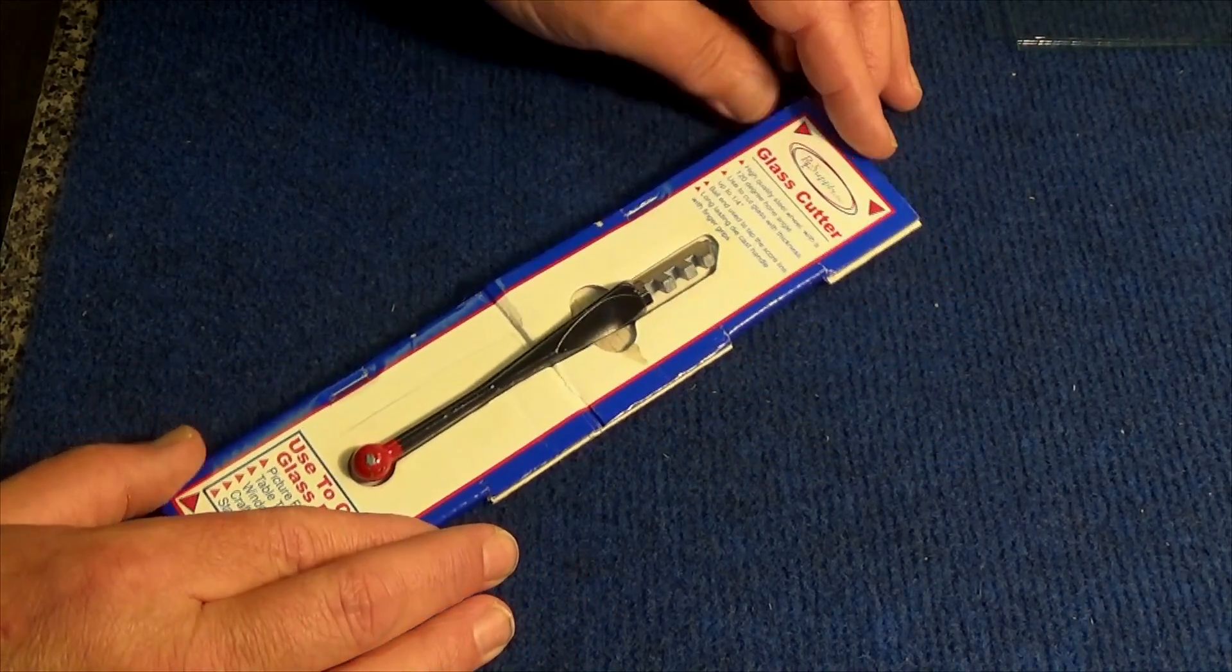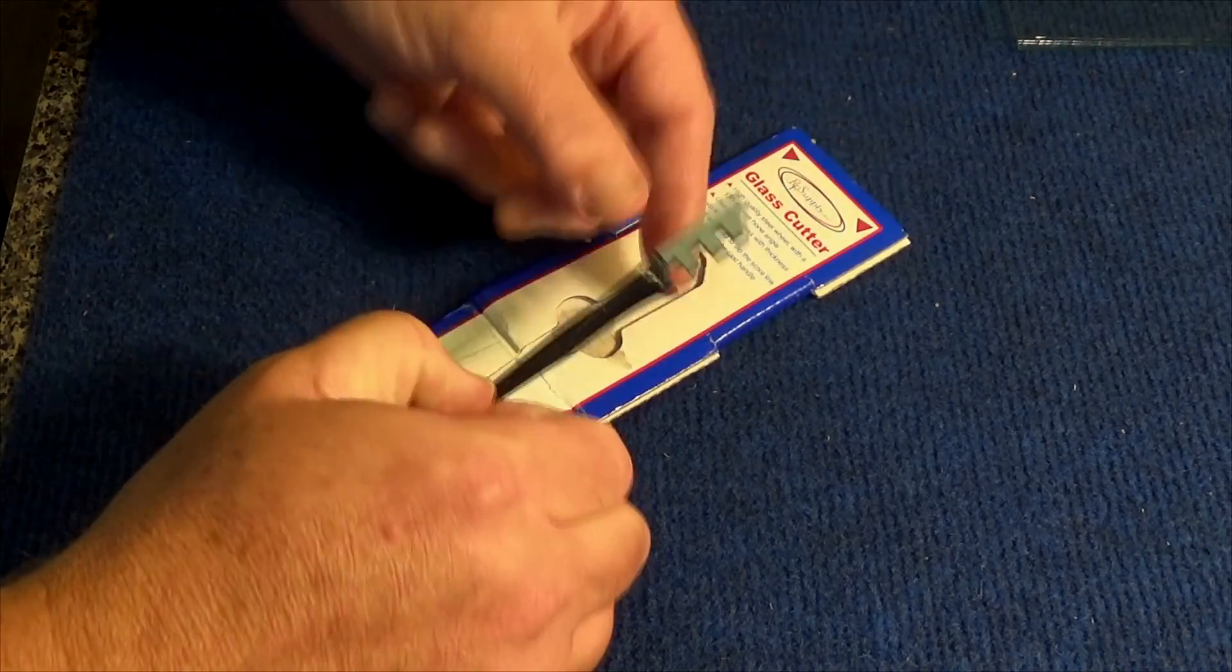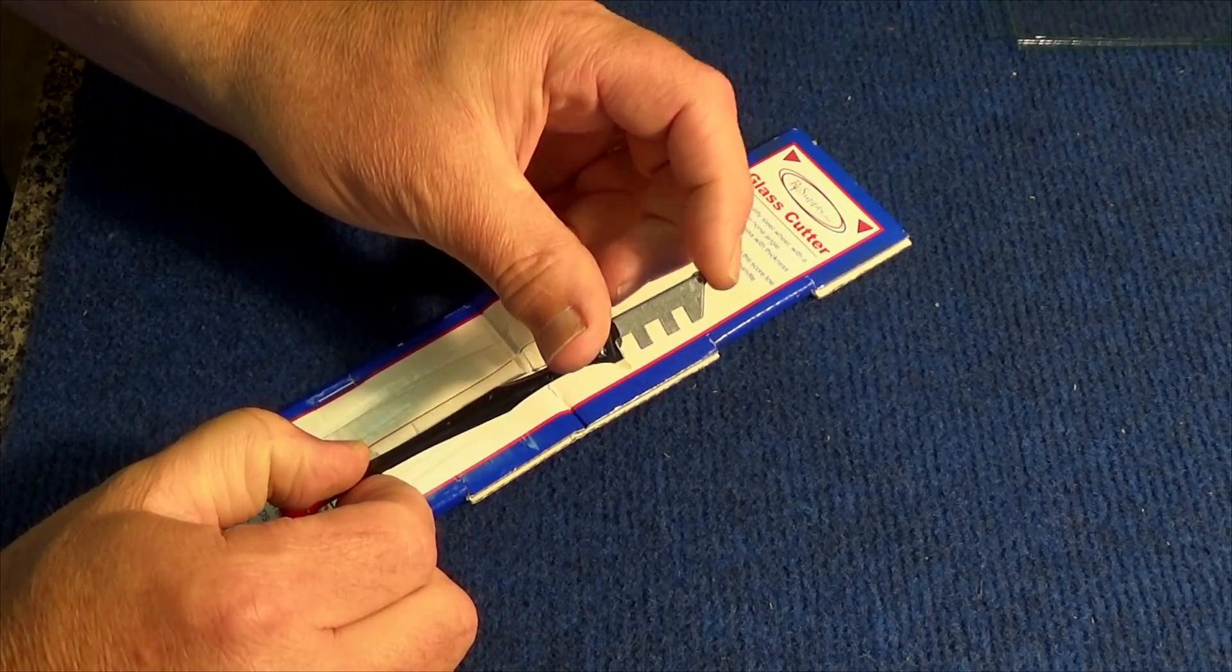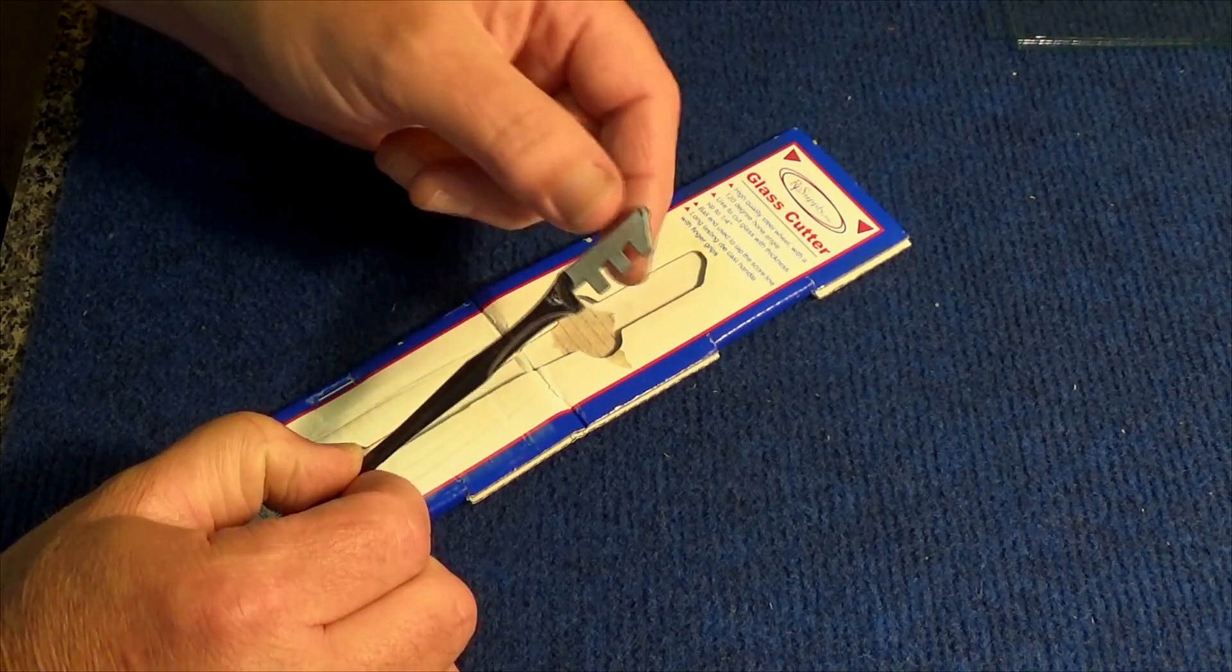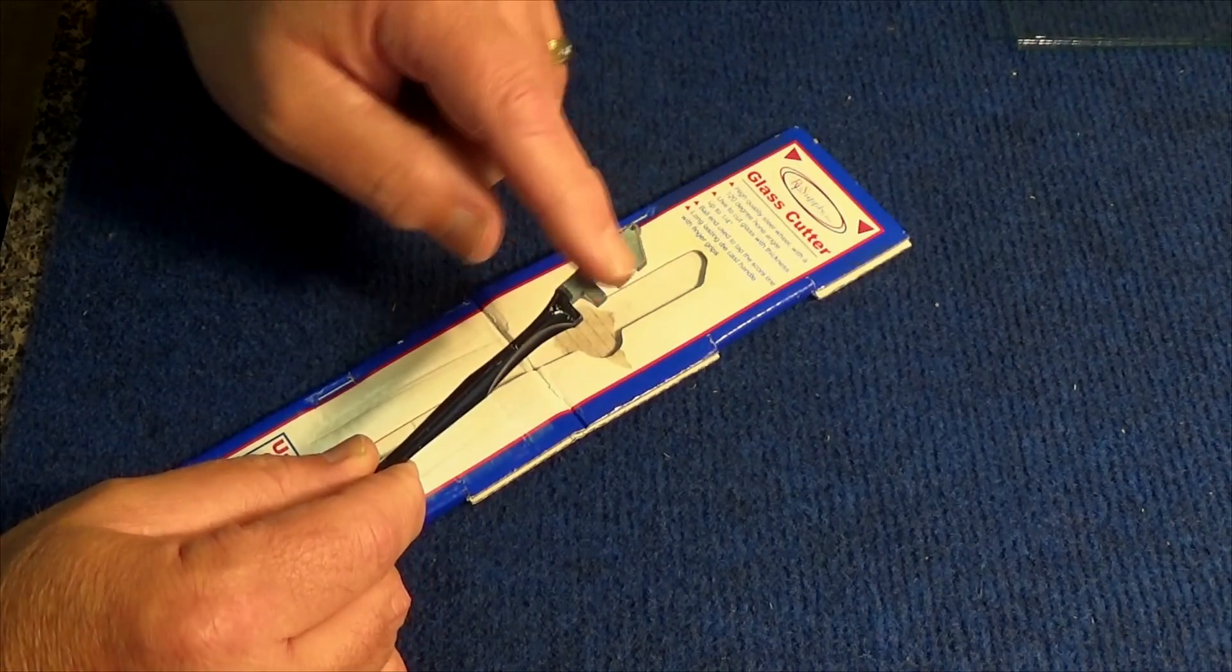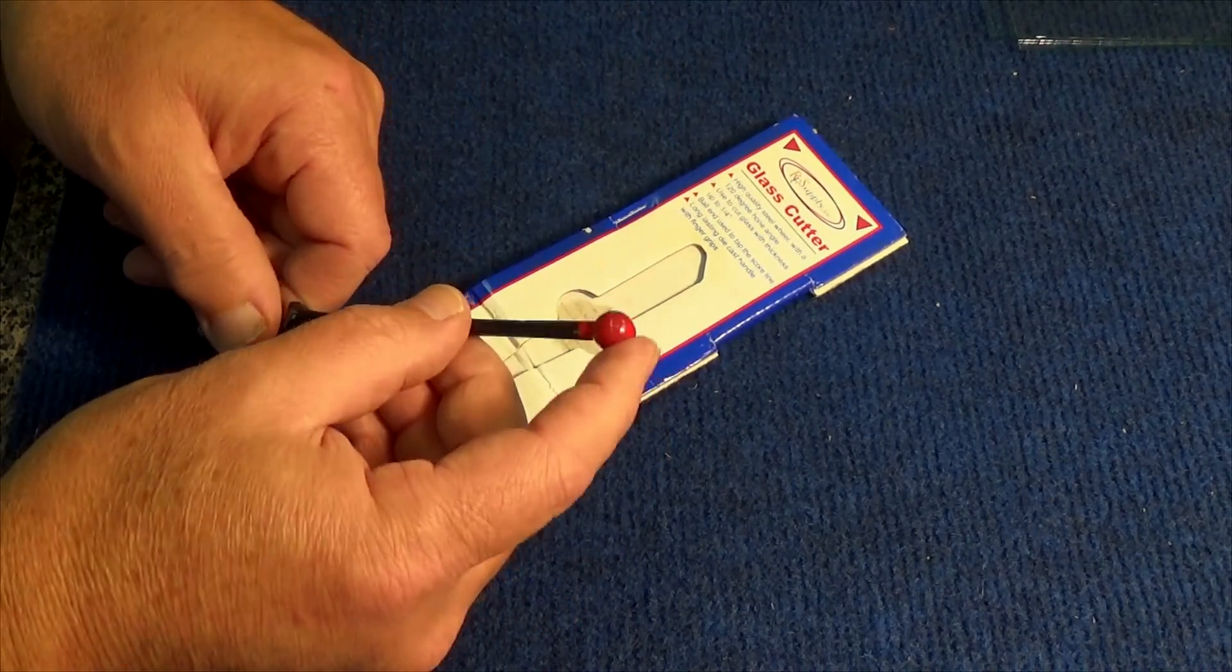It has a little cutting wheel here on the top. These little notches are for breaking the glass out. I don't normally use those, but I do use this. This is a hammer that you tap the score line with.